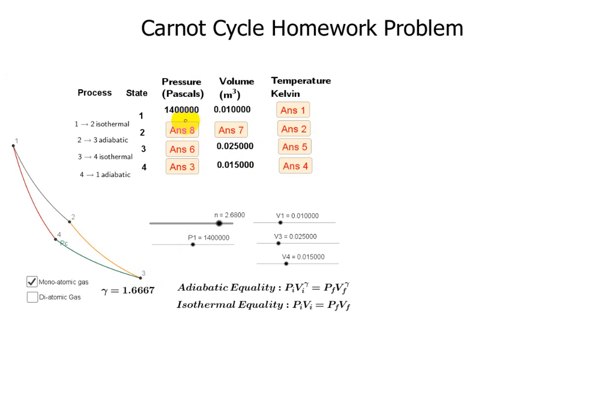For state one, the pressure is 1.4 megapascals and the volume is 0.01 cubic meters. The volume is also given for state three as 0.025 cubic meters and for state four as 0.015 cubic meters. The number of moles is 2.68 moles.